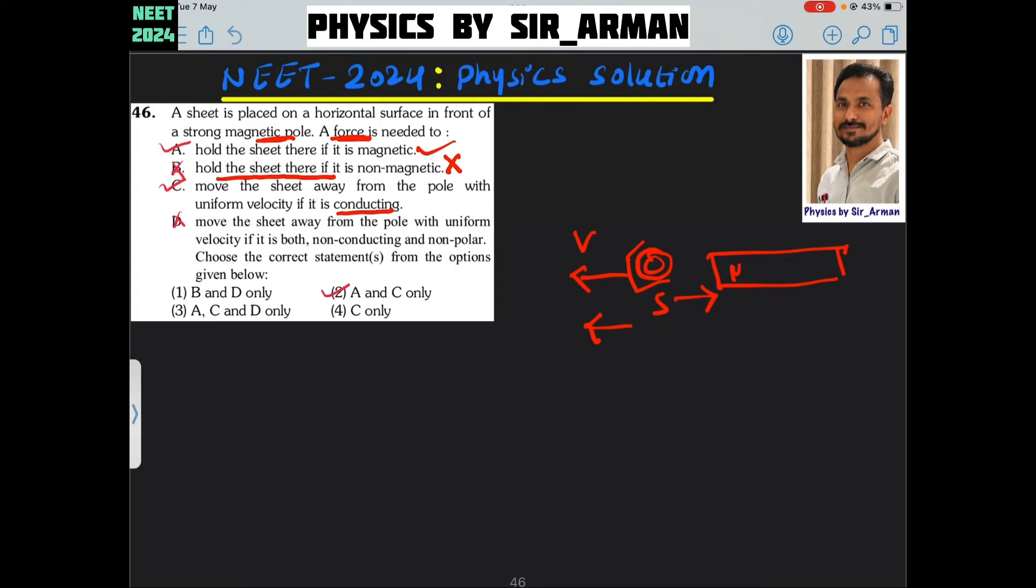Because it is conducting, that is why the eddy currents will generate such that the sheet will be pulled towards the magnet. So a force will be needed to maintain a constant velocity.